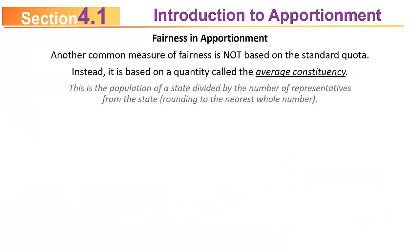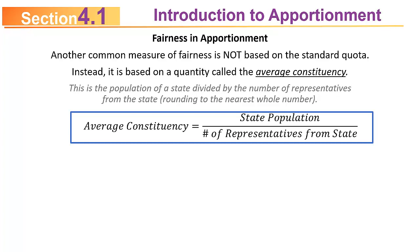That's not the only way to judge fairness. Another common measure is called the average constituency. The average constituency is simply the population of a state divided by the number of representatives from that state, rounded to the nearest whole number. Again, 'state' can mean city, county, or any other subdivision.